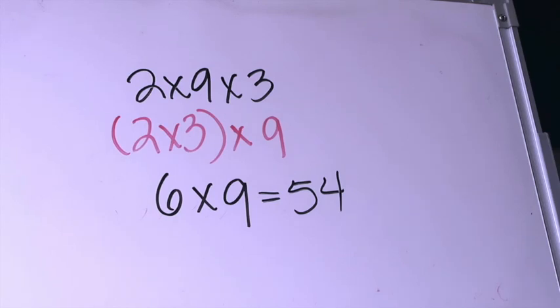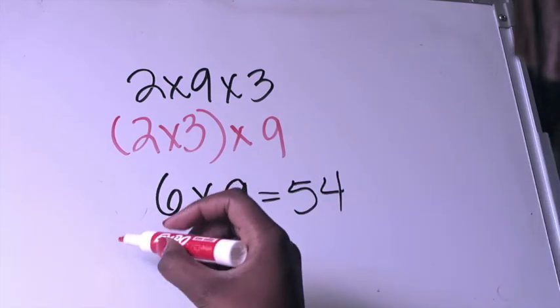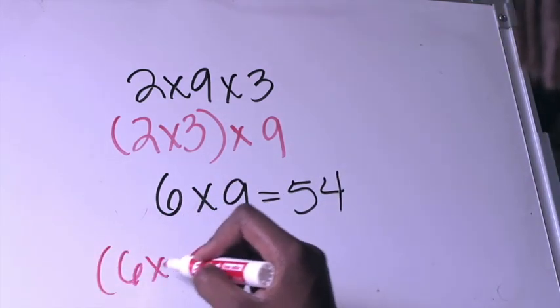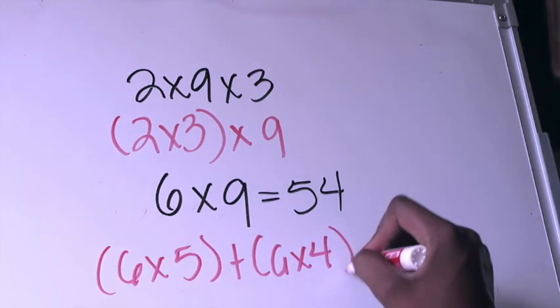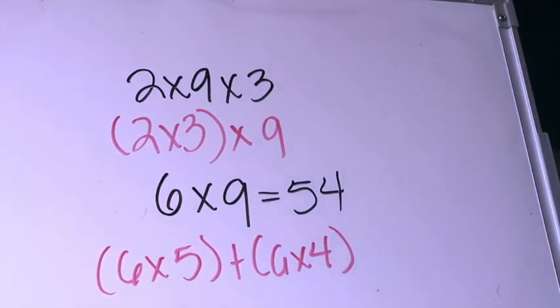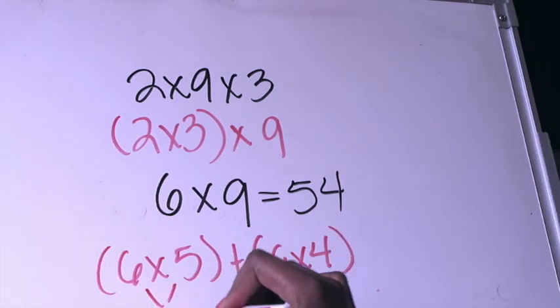I could use the distributive property and instead of doing 6×9, I could do 6×5 plus 6×4 because those are a little bit easier for me and then this would give me 30.